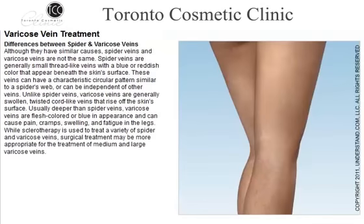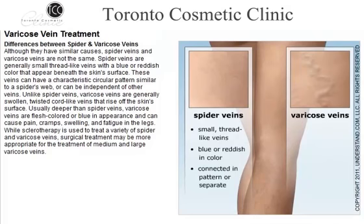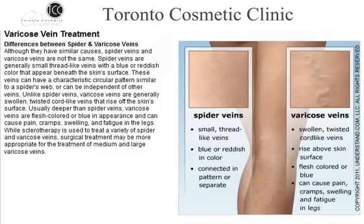Although they have similar causes, spider veins and varicose veins are not the same. Spider veins are generally small, thread-like veins with a blue or reddish color that appear beneath the skin's surface. These veins can have a characteristic circular pattern similar to a spider's web, or can be independent of other veins. Unlike spider veins, varicose veins are generally swollen, twisted cord-like veins that rise off the skin's surface. Usually deeper than spider veins, varicose veins are flesh-colored or blue in appearance and can cause pain, cramps, swelling, and fatigue in the legs. While sclerotherapy is used to treat a variety of spider and varicose veins, surgical treatment may be more appropriate for medium and large varicose veins.